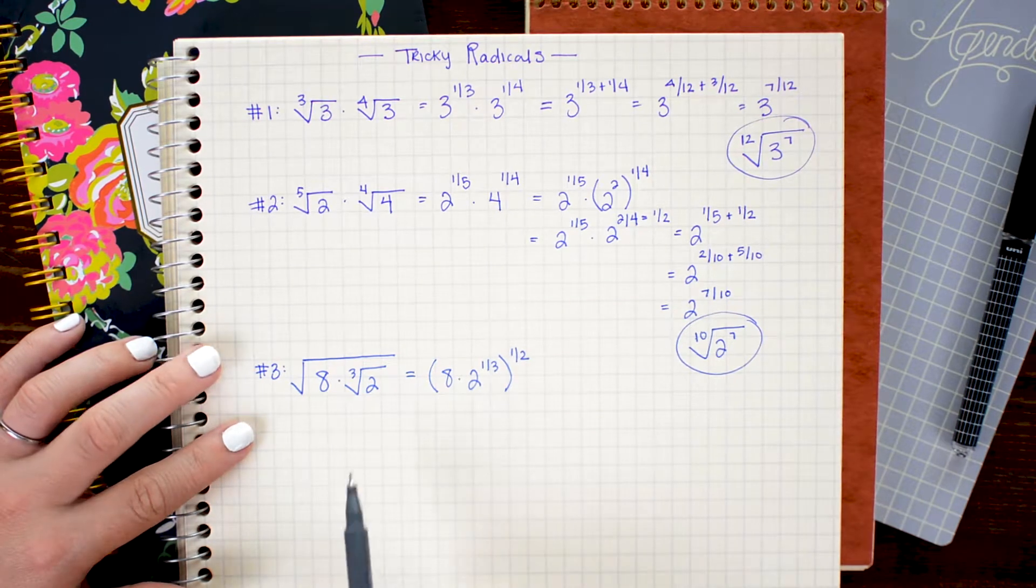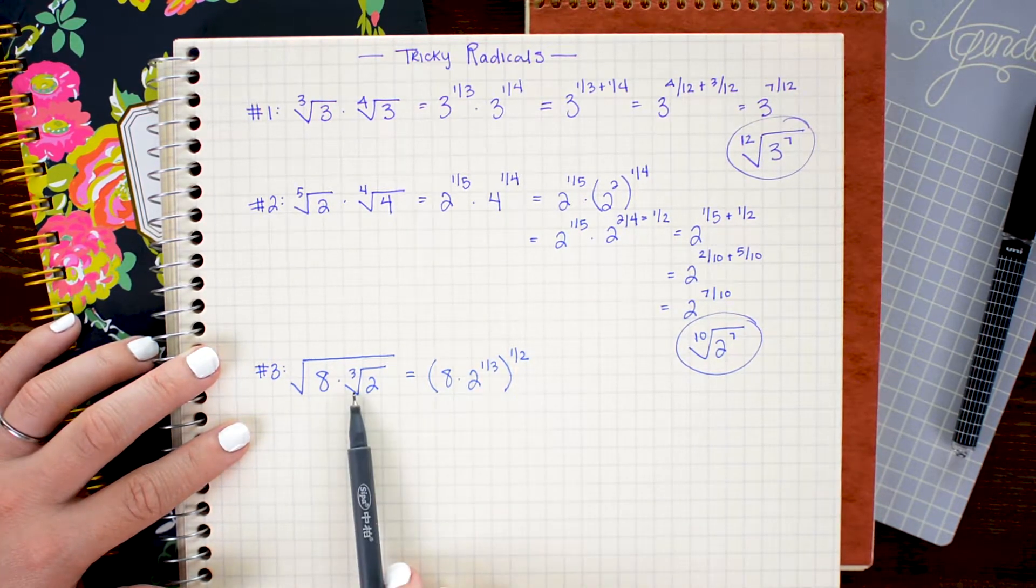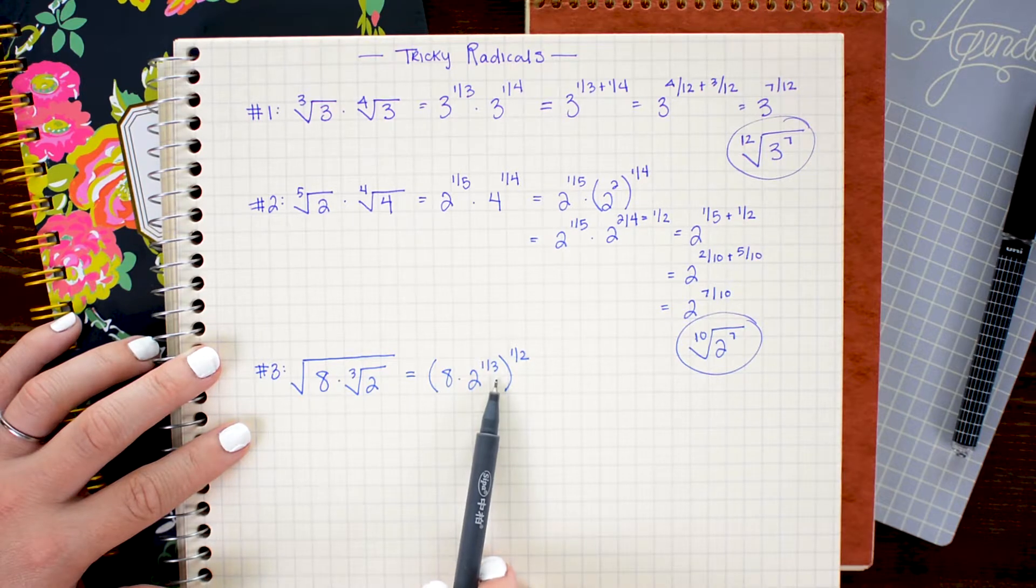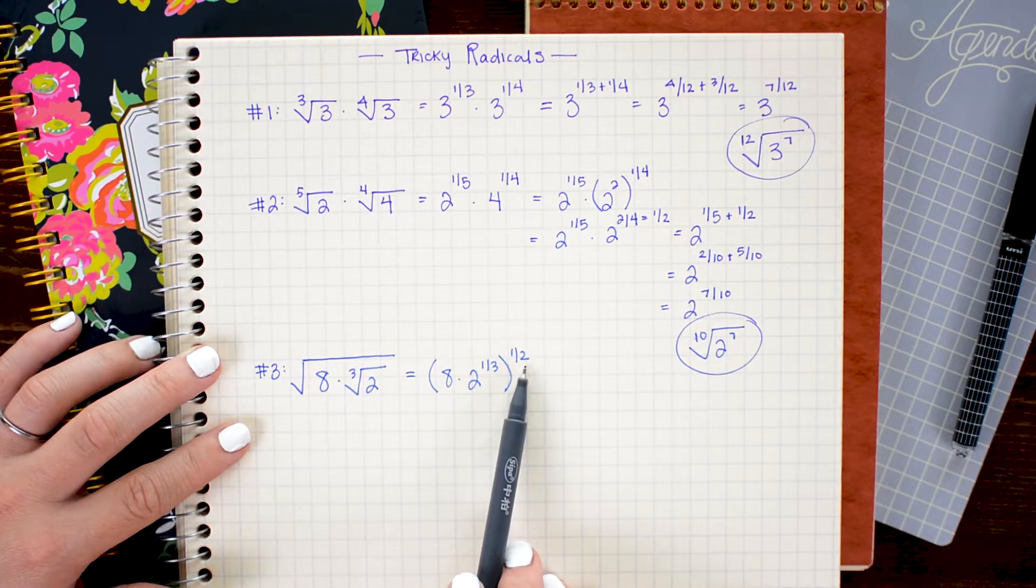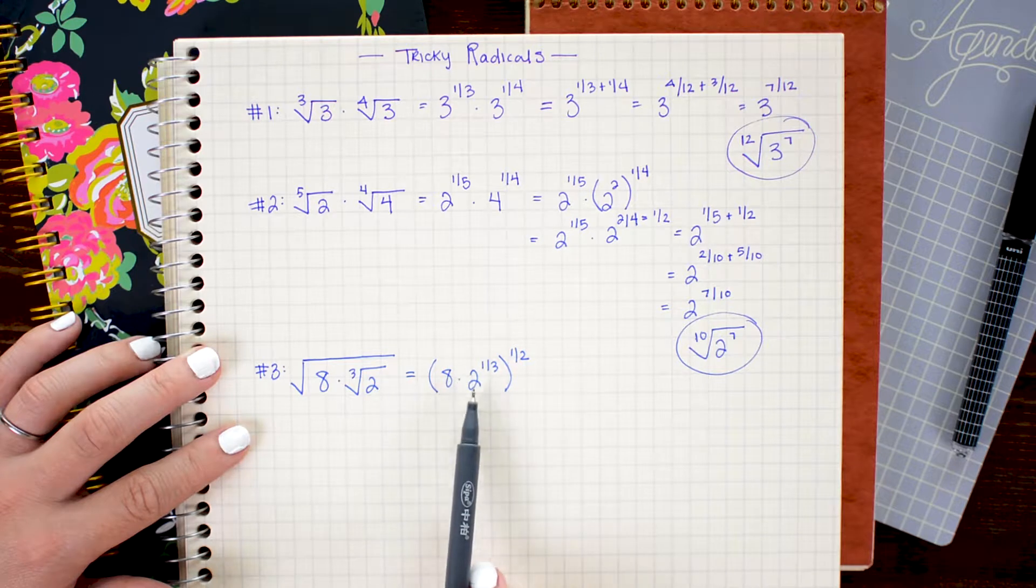There I just replaced the square root with a one-half power and the cube root with a one-third power. Now according to our exponent rules this one-half power will get applied to both the 8 and the 2 to the one-third.